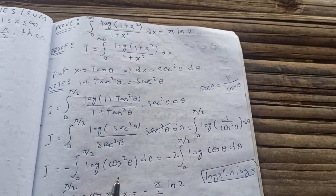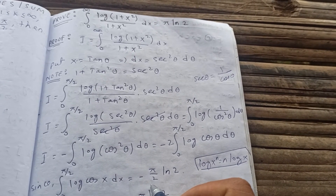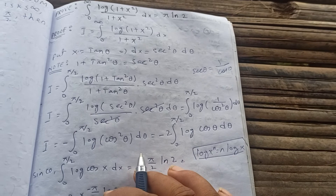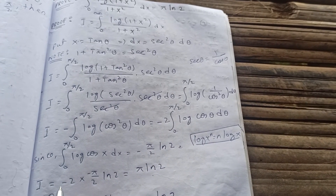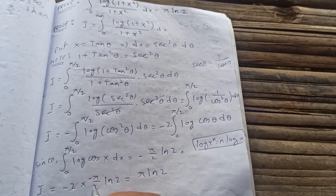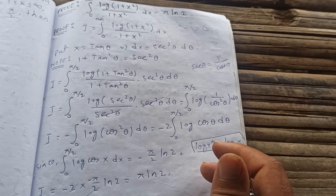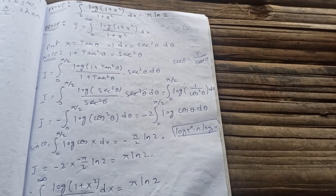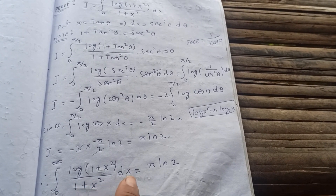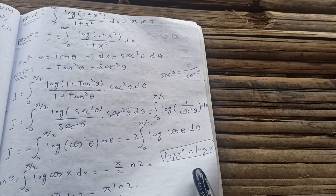We have already evaluated that the integral from 0 to π/2 of log(cos θ) dθ equals −π/2 times natural log of 2 — you can check the previous video for that result. Substituting here: I = −2 × (−π/2 × ln 2). The negatives cancel and the 2s cancel, giving I = π·ln 2. Therefore the integral from 0 to infinity of log(1 + x²) / (1 + x²) dx equals π times natural log of 2.